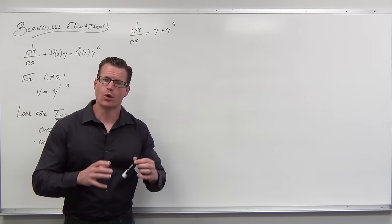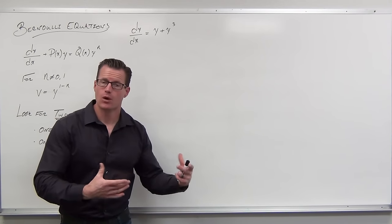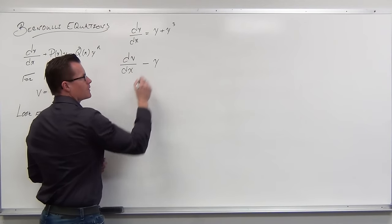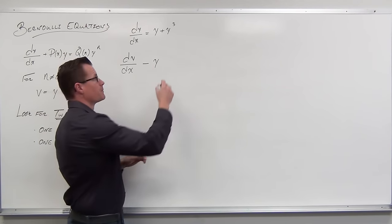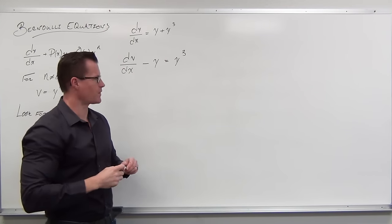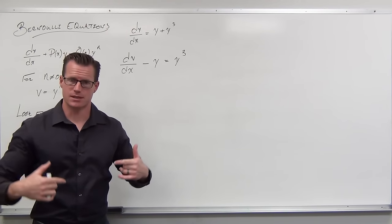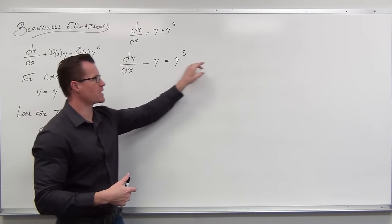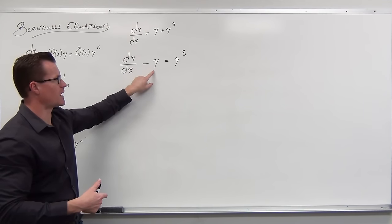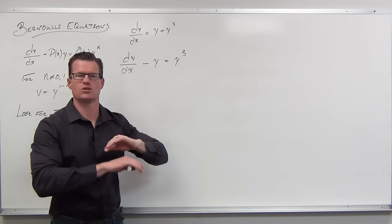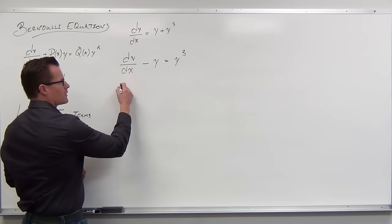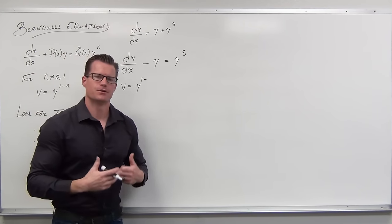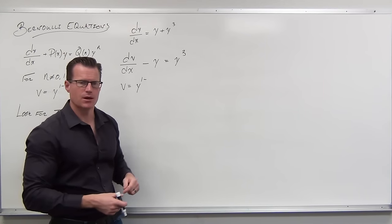We're going to try to structure this as a linear. Linear means you want the dy/dx with the function that has y to the first on one side, and everything else on the other side. You go, well that's not linear. Exactly — that's why we need a substitution. The substitution we're going to make will create something that when we multiply both sides to get rid of a piece, it's going to create something in the first power.